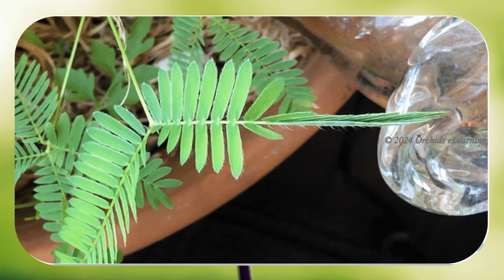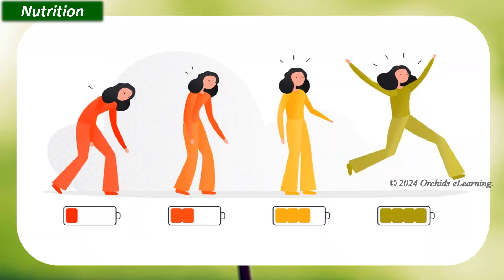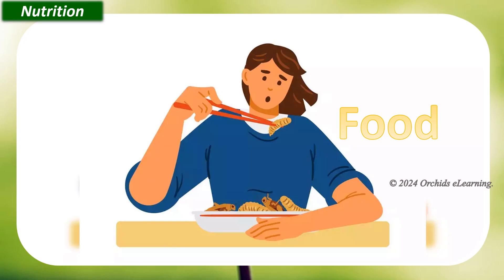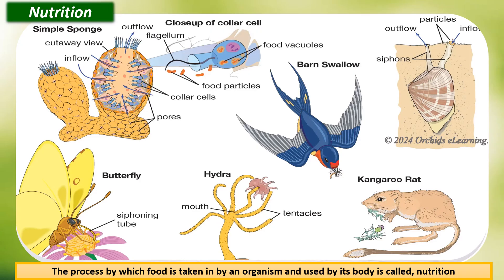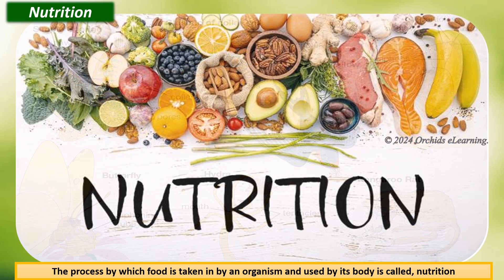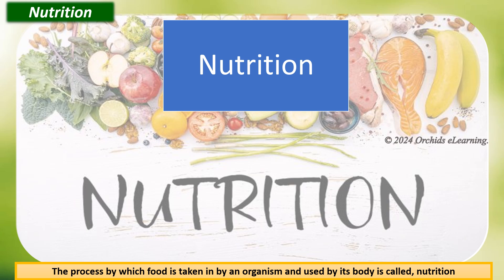Organisms need energy to live and grow. How do they obtain this energy? From food. The substance broken down by chemical processes in the body of an organism to give energy is called food. The process by which food is taken in by an organism and used by its body is called nutrition. There are two main modes of nutrition: autotrophic and heterotrophic.